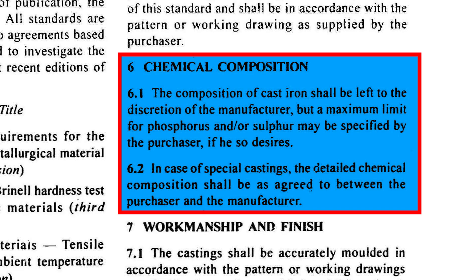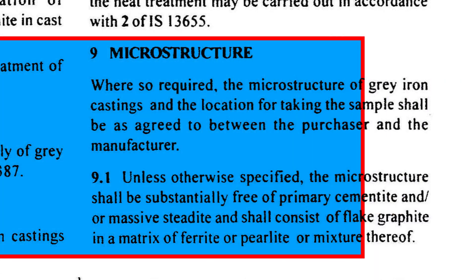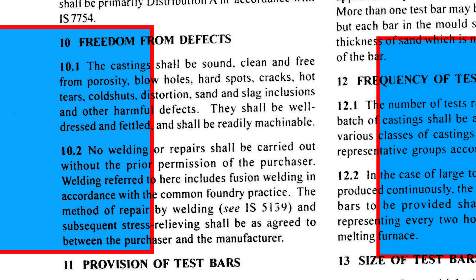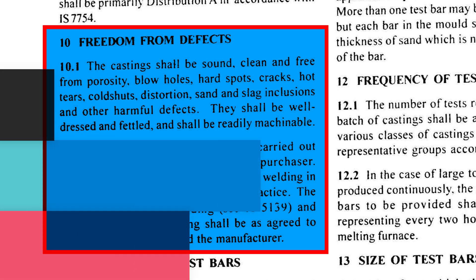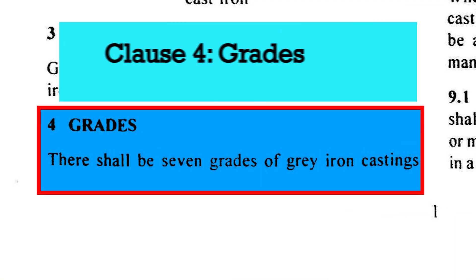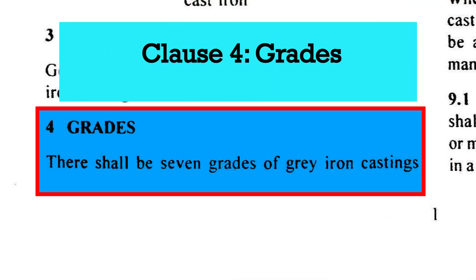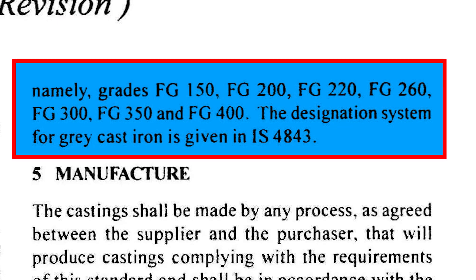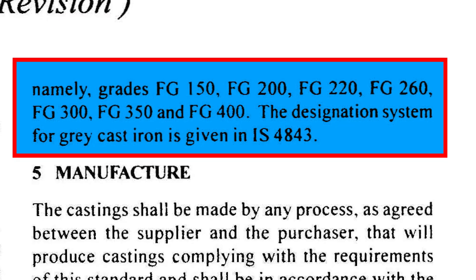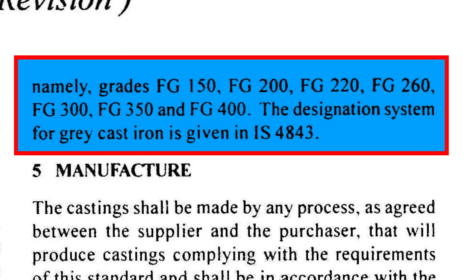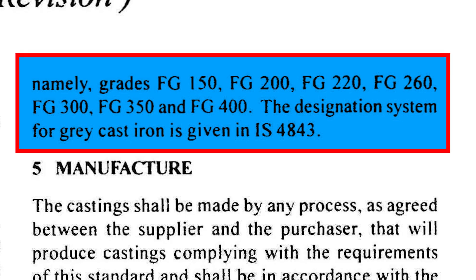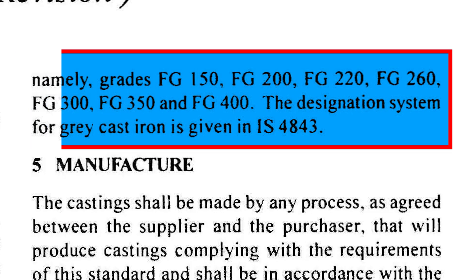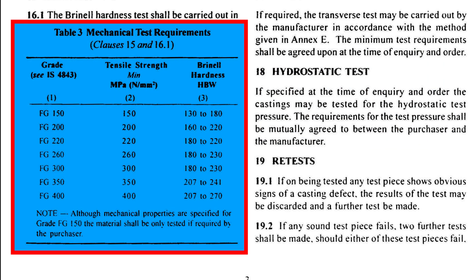This standard ensures it has the right mix of elements, the correct microstructure, the needed strength and is free from porosity. IS-210 specifies 7 grades designated as FG-XXX, where FG represents Grey Iron and XXX indicates the minimum tensile strength of that grade in MPa.